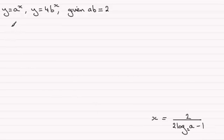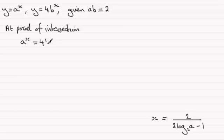Well first of all, we know that at the point of intersection we can equate the two y coordinates. So let's just put an intro here. At point of intersection, we know that a to the power x must equal 4b to the power x. The y coordinates are going to be exactly the same.